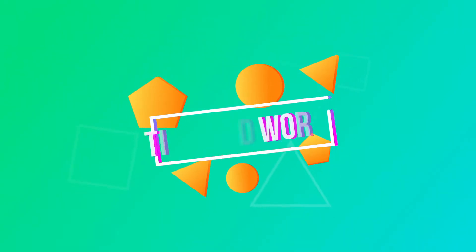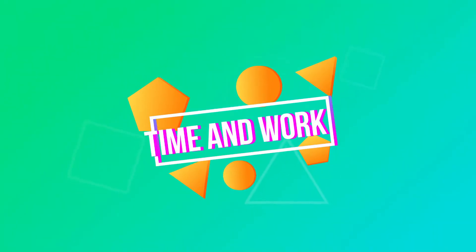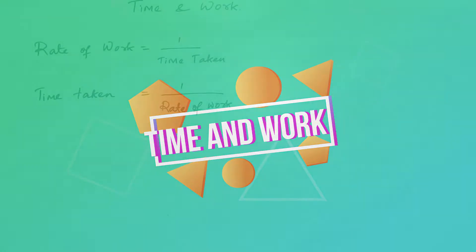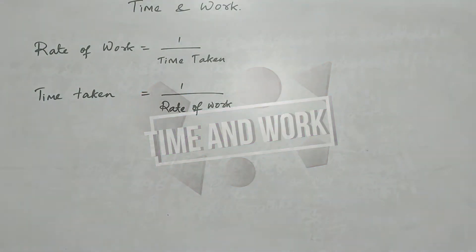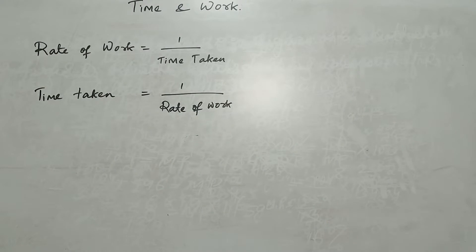Time and work: rate of work is equal to one divided by time taken, and time taken is equal to one divided by rate of work.